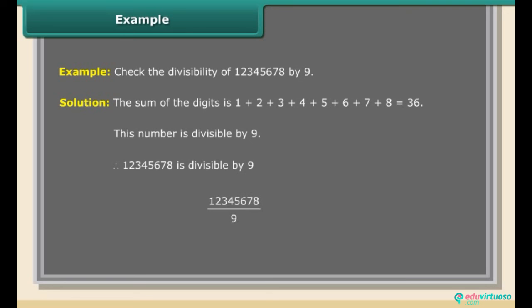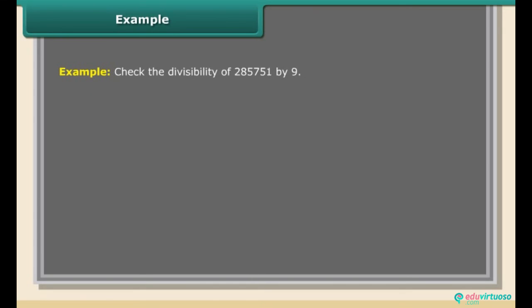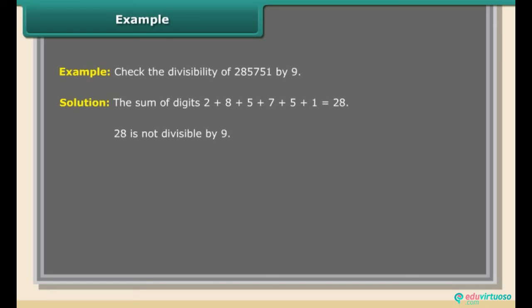12345678 ÷ 9 = 1371742. Example: Check the divisibility of 285751 by 9. The sum of digits is 2+8+5+7+5+1 = 28. Since 28 is not divisible by 9, the number 285751 is not divisible by 9.